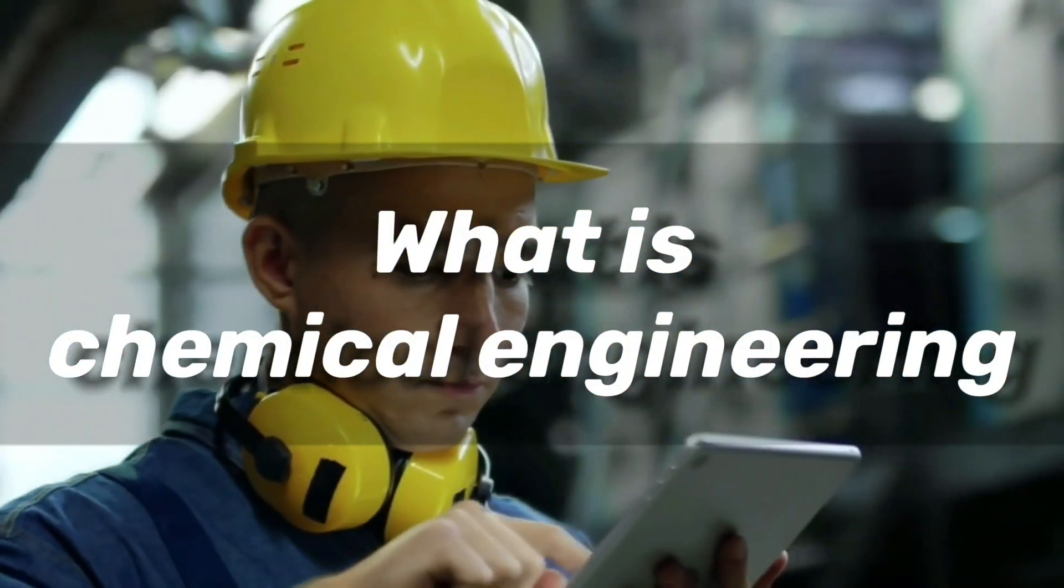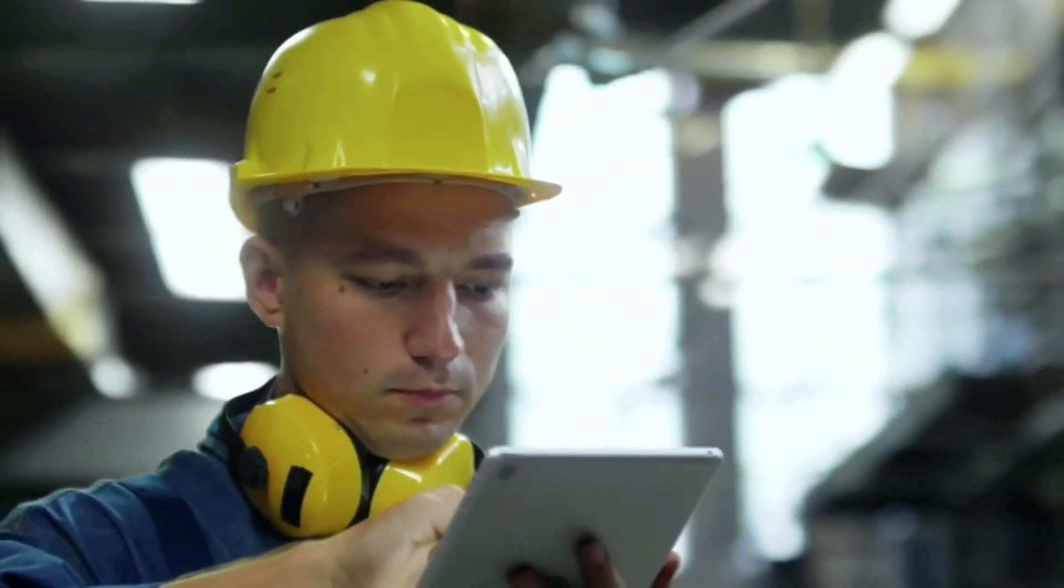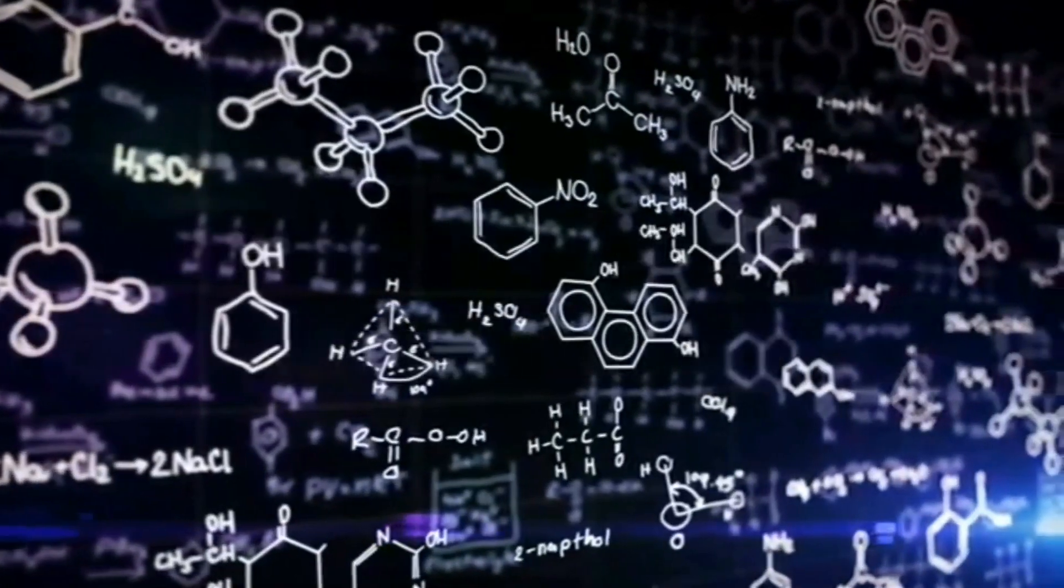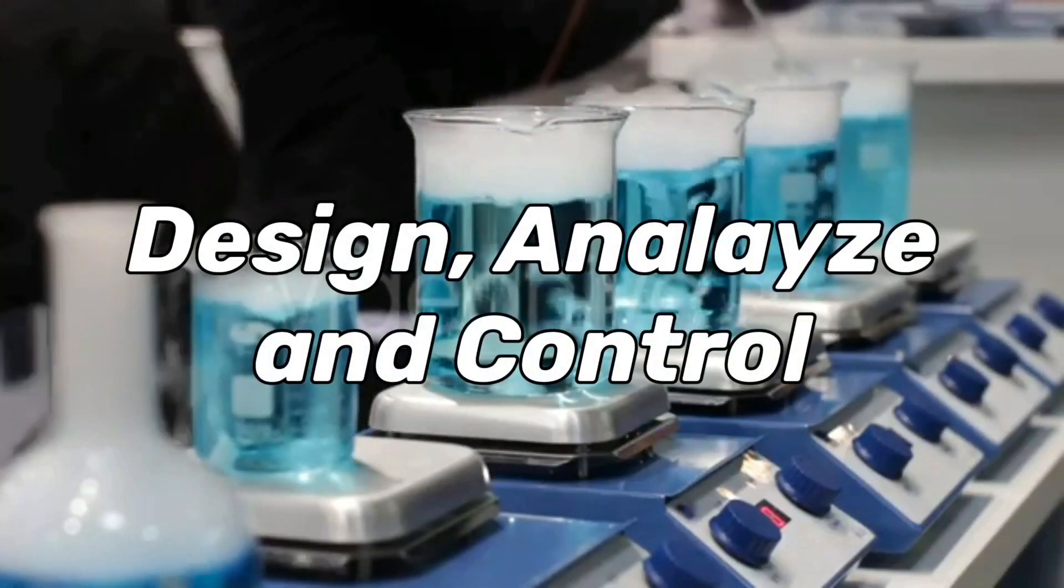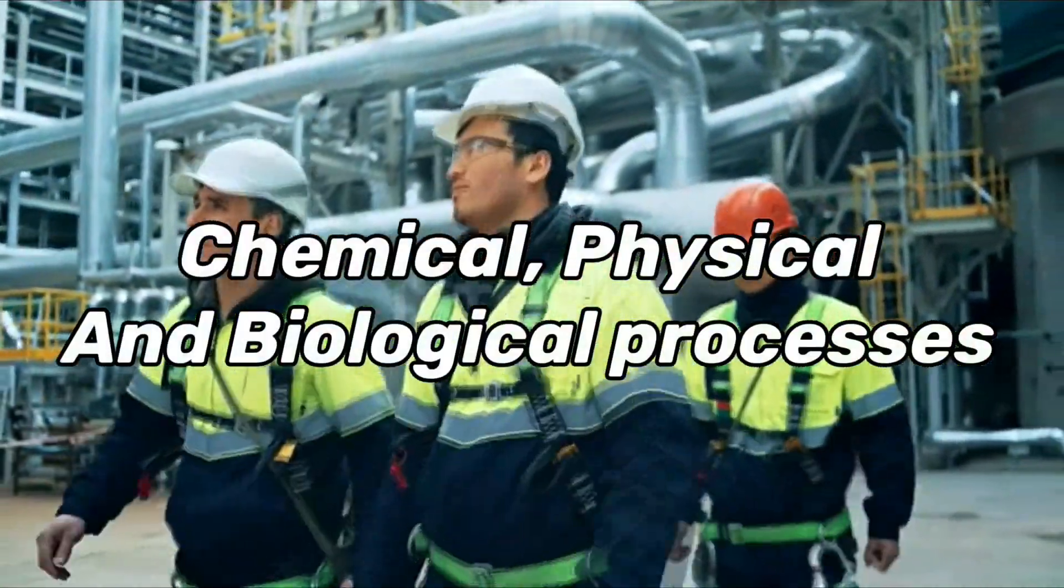What is Chemical Engineering? Chemical Engineering combines three basic physical sciences - chemistry, physics, and biology - alongside mathematics, and applies them to design, analyze, and control of chemical, physical, and biological processes.